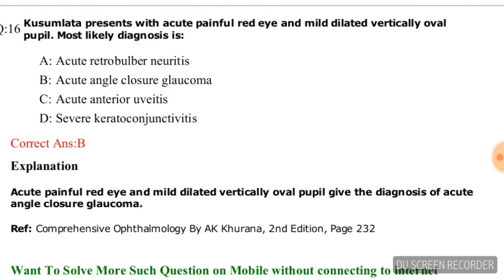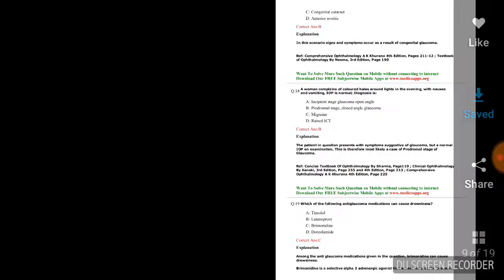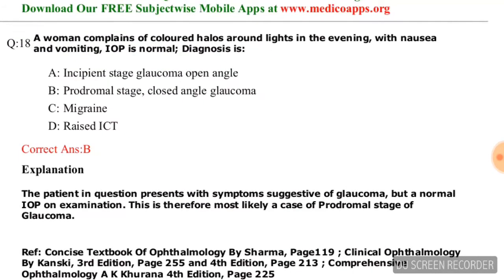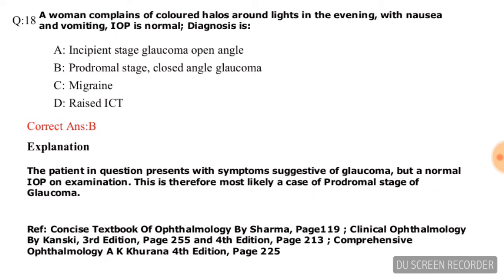Question number thirteen: A patient presents with acute painful red eye and a mildly dilated vertically oval pupil. The most likely diagnosis is — options are acute retrobulbar neuritis, acute angle closure glaucoma, acute anterior uveitis, severe keratoconjunctivitis. Option B is correct: acute angle closure glaucoma.